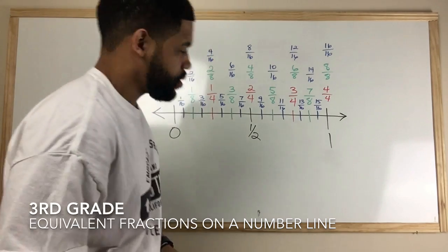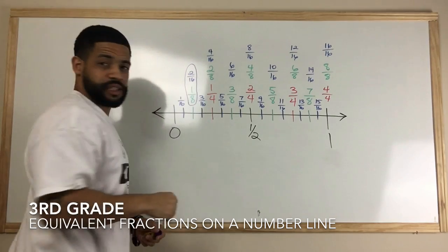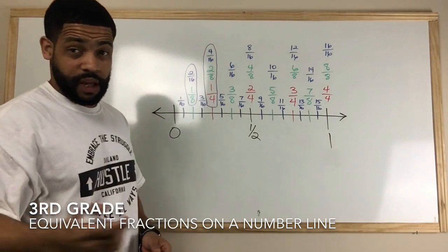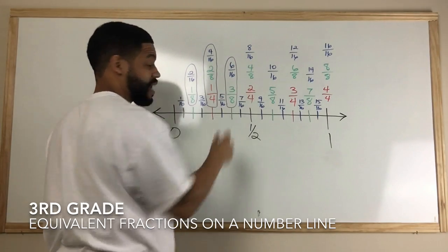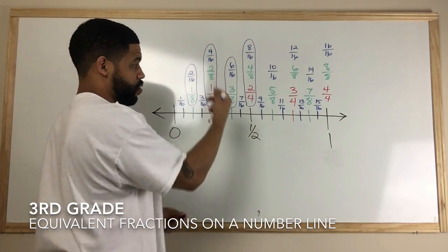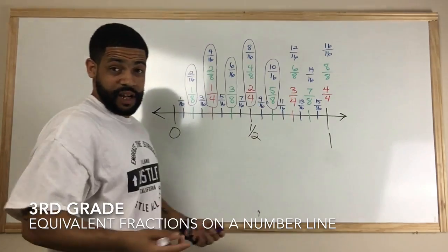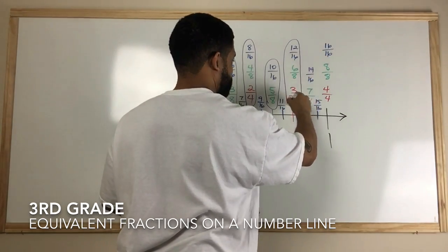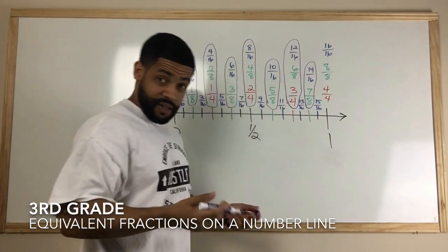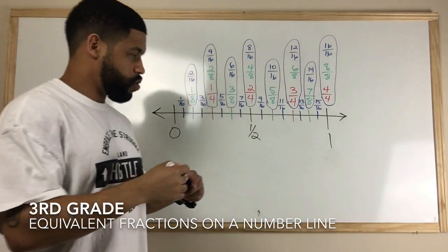Now you can see several equivalent fractions: two sixteenths and one eighth have the same value; four sixteenths, two eighths, and one fourth have the same value; three eighths and six sixteenths have the same value; eight sixteenths, four eighths, two fourths, and one half all have the same value; twelve sixteenths, six eighths, and three fourths all have the same value; fourteen sixteenths and seven eighths have the same value; and sixteen sixteenths, eight eighths, four fourths, and two halves all equal one.